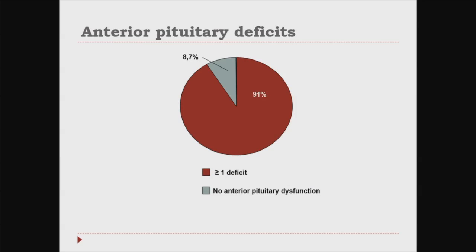To show you the frequency of the entire anterior pituitary deficits: 91% of patients have at least one deficit in the anterior pituitary, only 8% have no anterior pituitary dysfunction, and 70% of patients have at least two deficits.